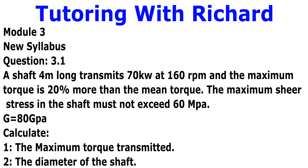Let's get straight into it. Our question states: a shaft, 4 meters long, transmits 70 kilowatts at 160 RPM, and the maximum torque is 20% more than the mean torque. The maximum shear stress in the shaft must not exceed 60 MPa and the modulus of rigidity is 80 GPa. We have to calculate the maximum torque transmitted and the diameter of the shaft.